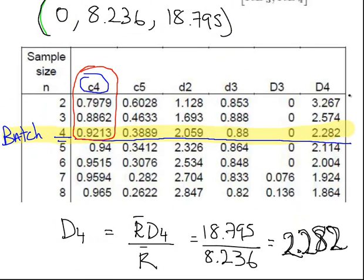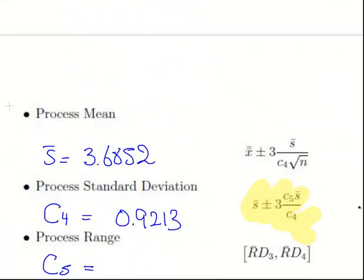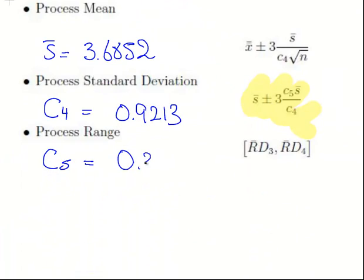Let's scroll up to it. That's C4 there, and C5 is right beside it: 0.3889.